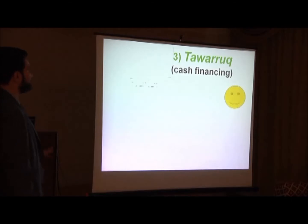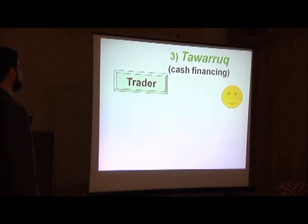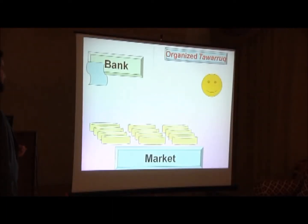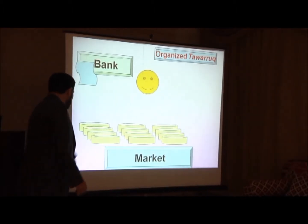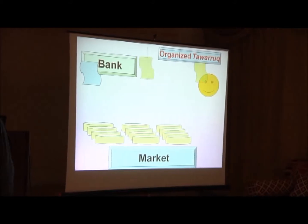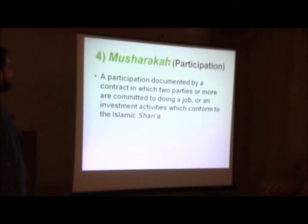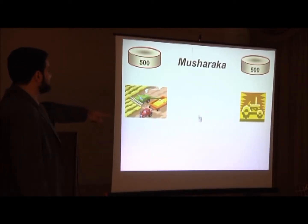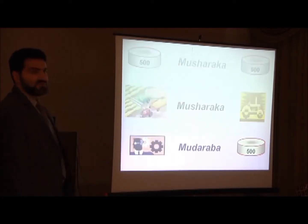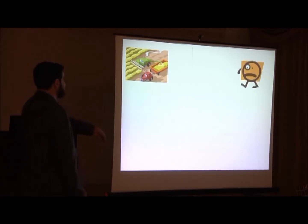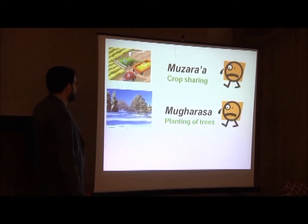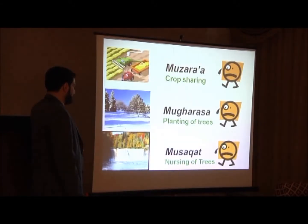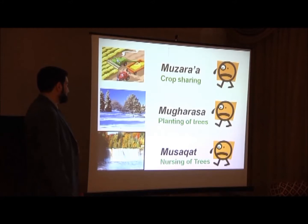There are many stages in murabaha. We also have cash financing we call tawarruq — organized tawarruq — buying goods from international markets. We have musharakah: work with work, cash with cash. Cash with work we also call mudaraba. For the rural sector we have different contracts: musaqah, muzara'ah — crop sharing and planting of trees, nurturing of trees — kinds of partnership. We also have participation that ends with ownership — musharakah mutanaqisah.